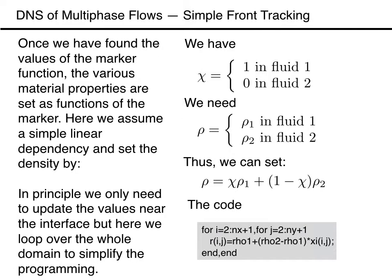Once the marker function has been constructed from the location of the front, we can set the various material properties as functions of the marker value. Here we assume a simple linear dependency and set the density as the marker function times density in fluid 1 (where the marker is 1), plus 1 minus the marker times the density in fluid 2 (where the marker is 0). In principle we only need to update values near the interface, but here we loop over the whole domain to simplify the programming. If we use the density as a marker function, then we obviously can skip this step.